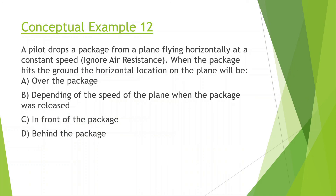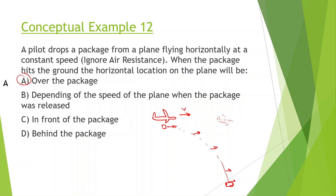Next problem: a pilot drops a package from a plane flying horizontally at constant speed. When the package hits the ground, where will the plane be? So we have the plane going at constant velocity — it drops the package and the package follows a curved path to the ground. The key is that the package's velocity in the x-direction is the same as the plane's x-direction velocity, so when the package lands, the plane will be directly overhead.